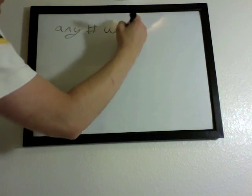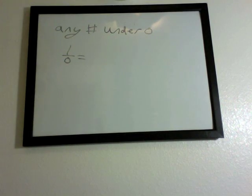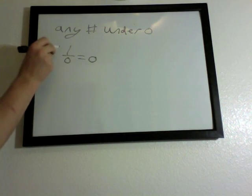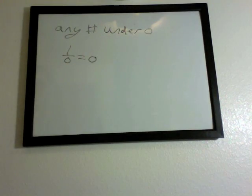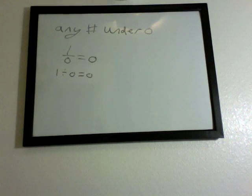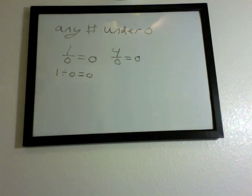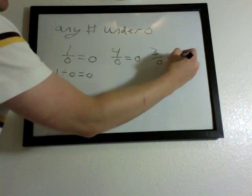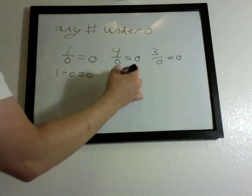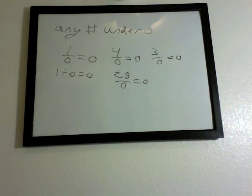Another rule: any number over zero — for example, one over zero — always equals zero, because you cannot divide by zero. This is like saying one divided by zero. For another example, four over zero is also zero, three over zero is also zero. Twenty-five over zero is zero. It's always going to stay the same, no matter what.